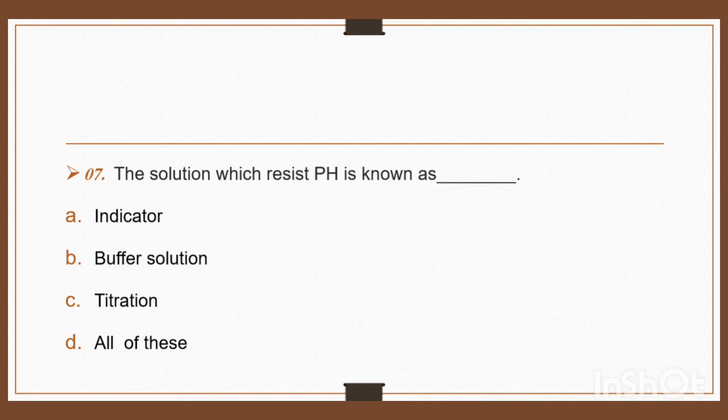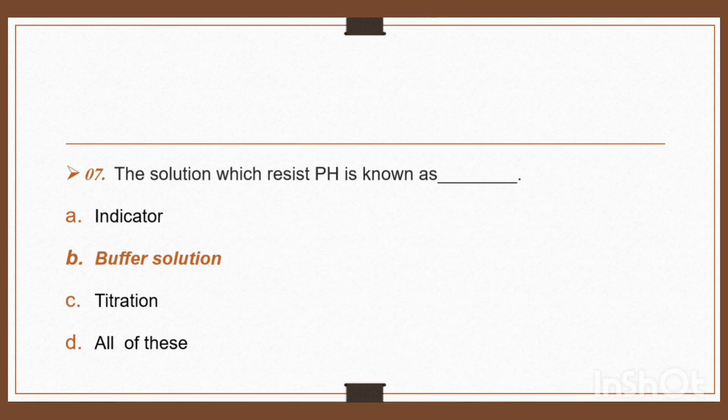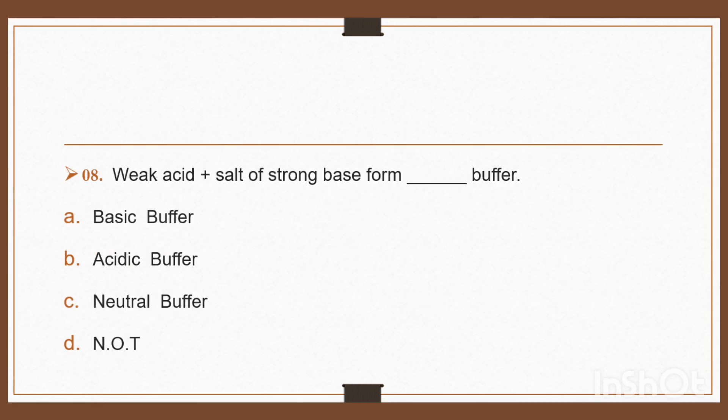Question 7: The solution which resists pH is known as — option A: indicator, option B: buffer solution, option C: titration, option D: all of these. The solution which resists pH is known as buffer solution. Right, option B: buffer solution.